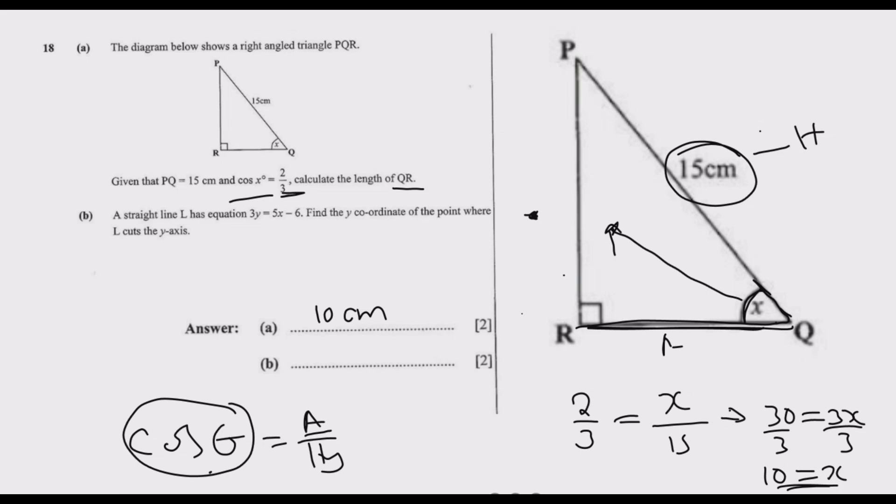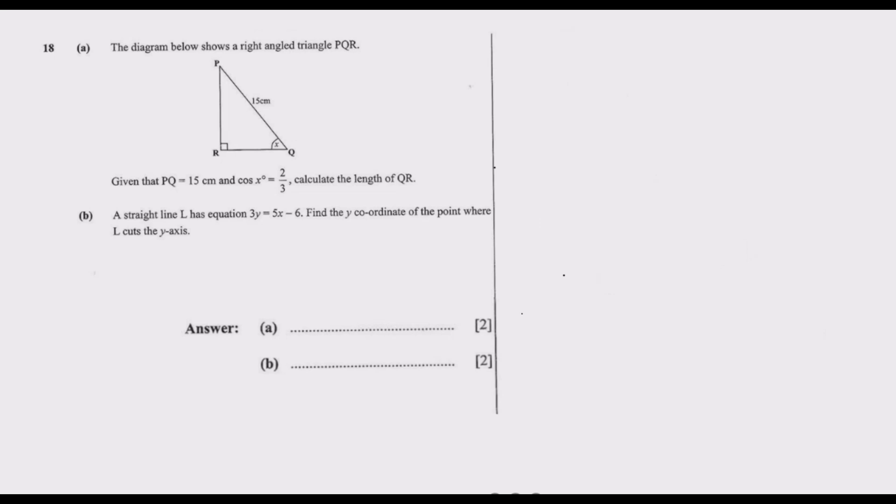Let's move to part B. A straight line L has equation 3y equals 5x minus 6. Find the y-coordinate of the point where L cuts the x-axis. When L cuts the x-axis, along this line at the endpoint, x equals zero. We make y the subject of the formula by dividing: y equals 5 over 3x minus 2.